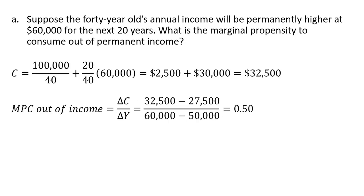Suppose the 40-year-old's annual income will be permanently higher at $60,000 for the next 20 years. What is the marginal propensity to consume out of permanent income? Instead of $50,000, we now have $60,000, which raises annual consumption to $32,500. This person's permanent income went up by $10,000 and consumption went up by $5,000. So $5,000 over $10,000 is 0.5 — which is just 20 divided by 40, also 0.5.